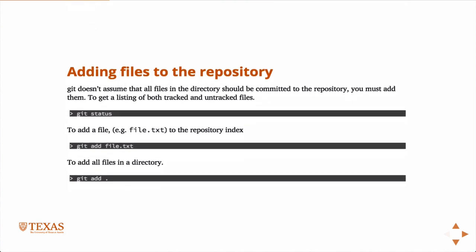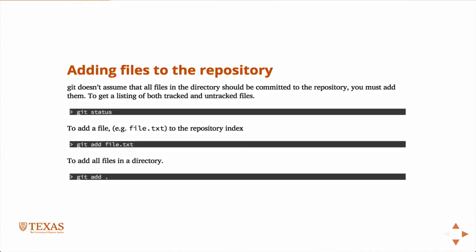To add files to the repository — just because files are there doesn't mean they're under version control yet. Git doesn't assume everything in the folder should be tracked. For example, if a program produces large reproducible output, you probably don't want to store that. To get a listing of tracked and untracked files, use git status. To add files, use git add, and you can add everything in the directory with git add dot, since dot is a shortcut for the current directory.